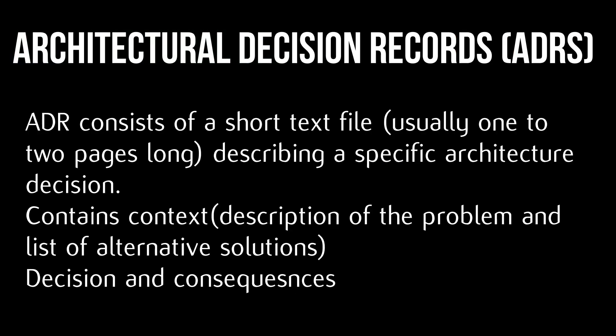Architectural Decision Record (ADR) is one of the most effective ways of documenting architecture decisions. An ADR consists of a short text file, usually one to two pages long, describing a specific architecture decision. It contains a description of the problem and a list of alternative solutions, as well as the decision and its consequences.